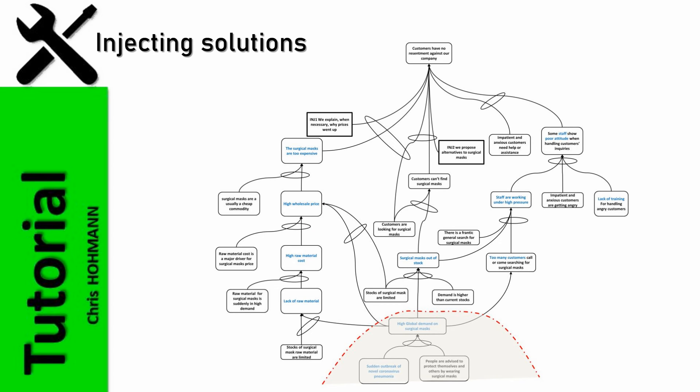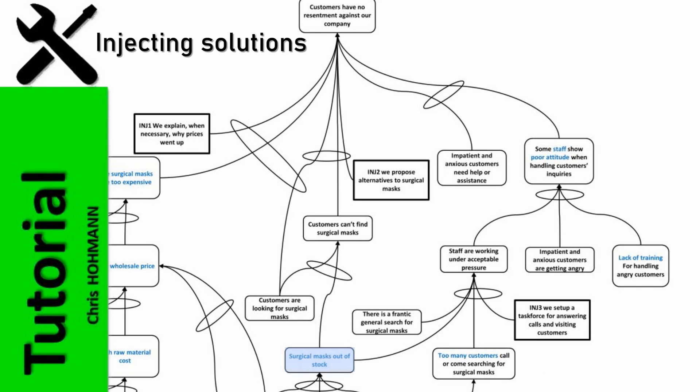The third pain customers may feel is poor treatment when they call or show up at the counter. Injection 3 is to set up a task force for coping with the surge of calls and visits to the counter. We read, if surgical masks are out of stock, and if there is a frantic general search for surgical masks, and if too many customers call or come searching, and injection 3, we set up a task force for answering calls and visiting customers, then staff are working under acceptable pressure. The idea here is to reduce the pressure so that staff are less likely to lose their temper.